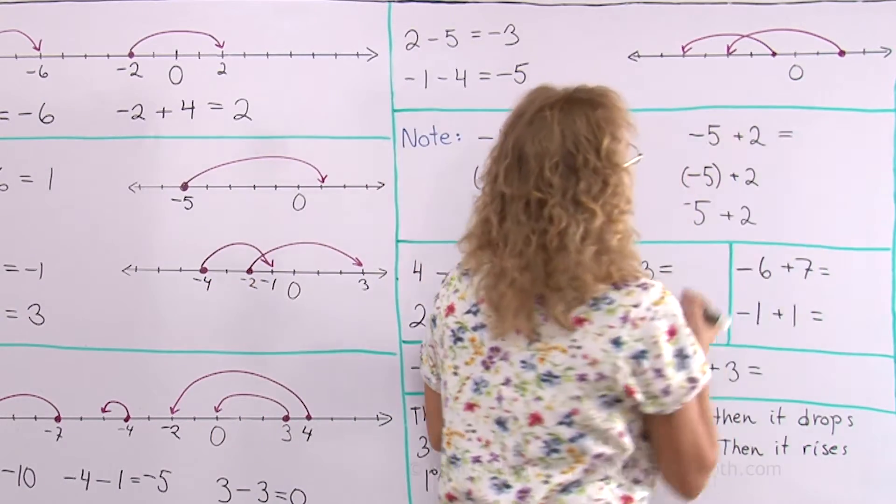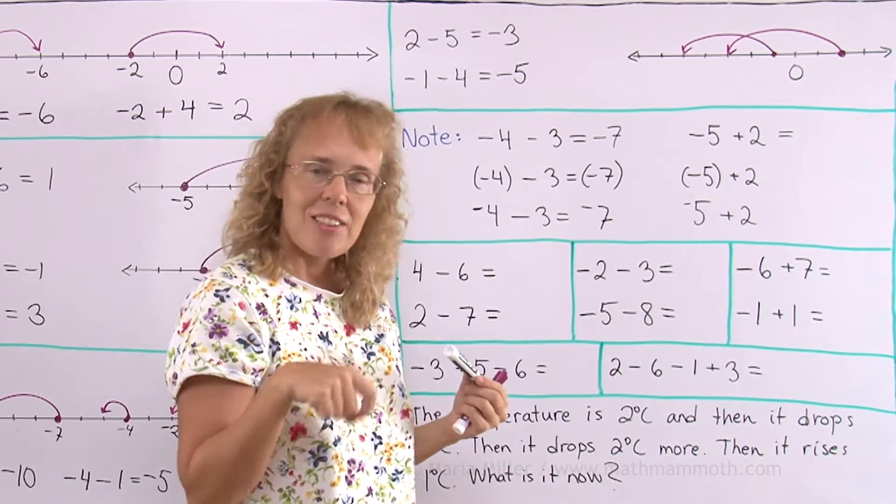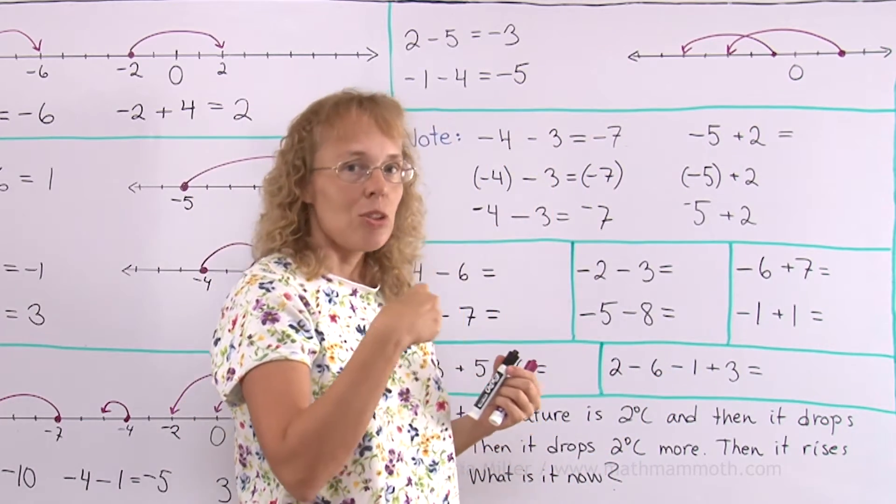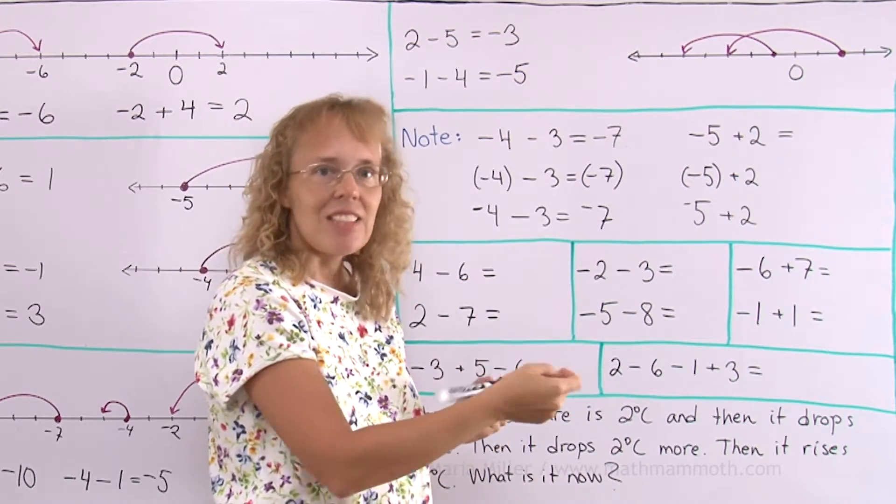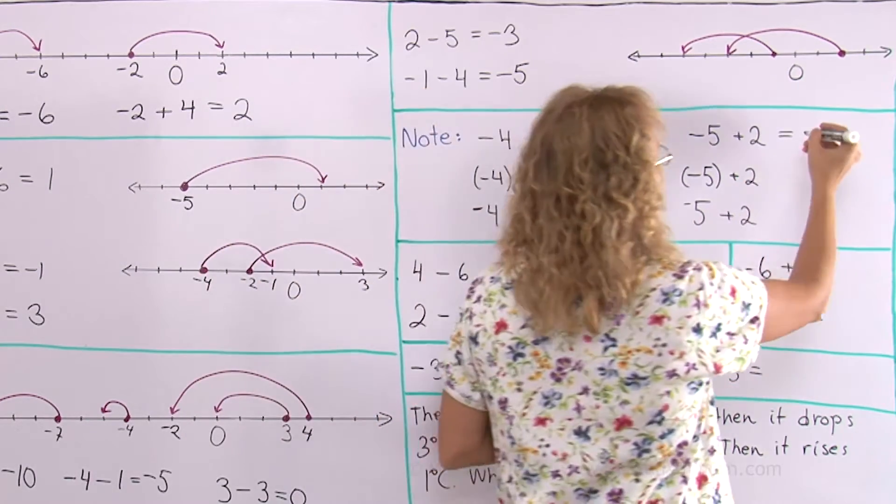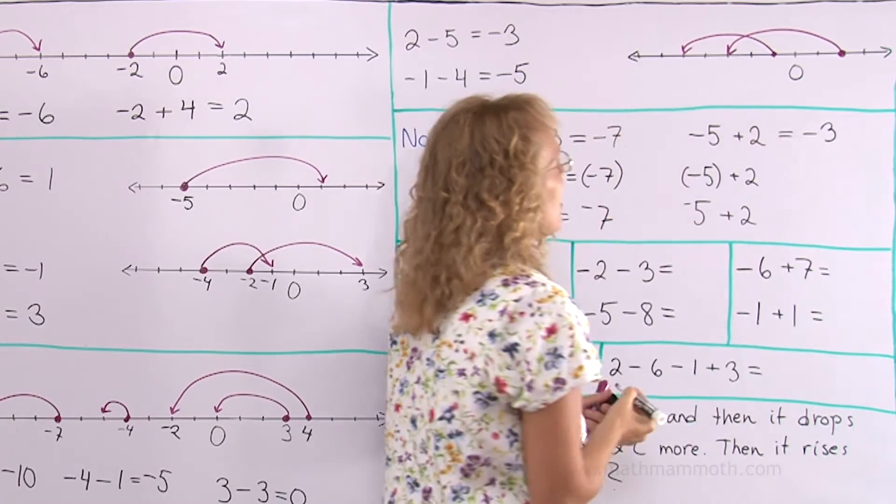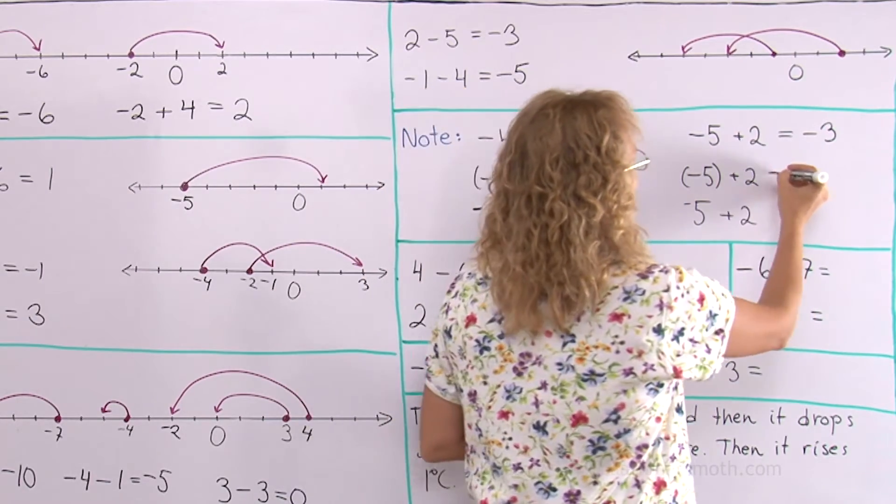So how do we solve it? You can imagine. Imagine being at negative 5 and jumping two steps towards the positive. So you end up with less negatives. So this is minus 3. I hope you can see that. All of these are minus 3.